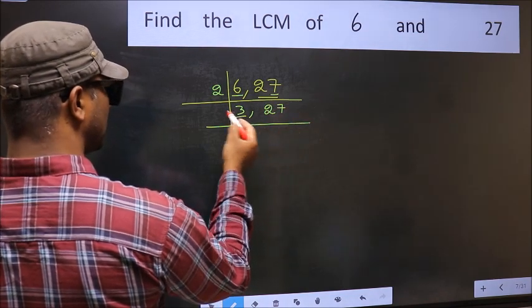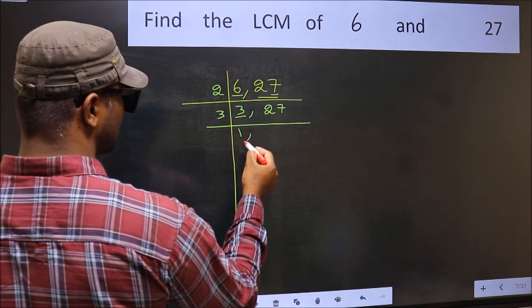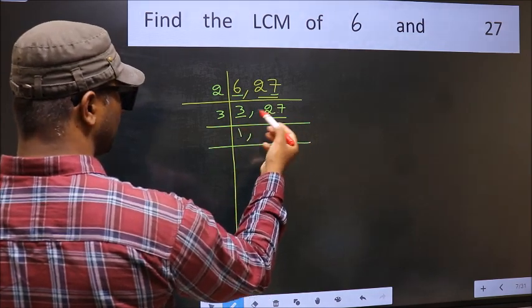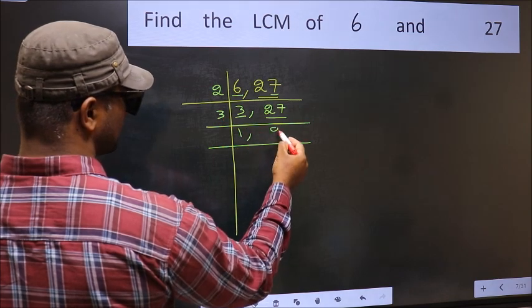Now here we have 3. 3 is the prime number, so 3 times 1 is 3. The other number 27. When do we get 27 in 3 table? 3 times 9 is 27.